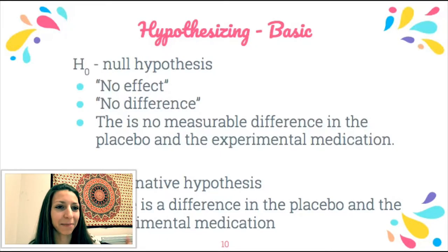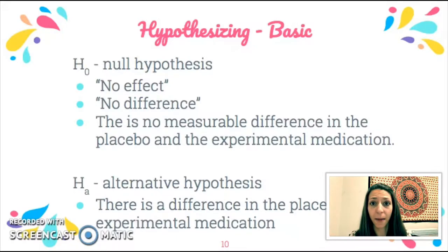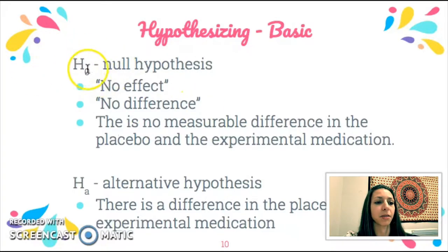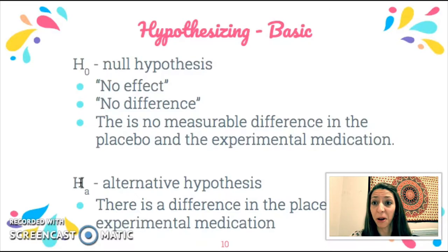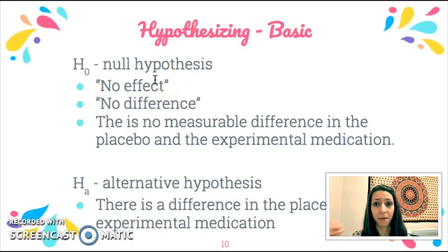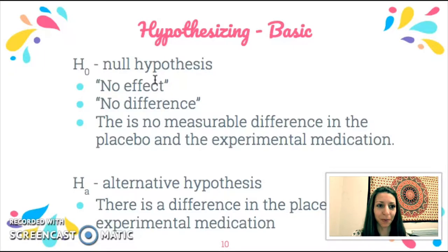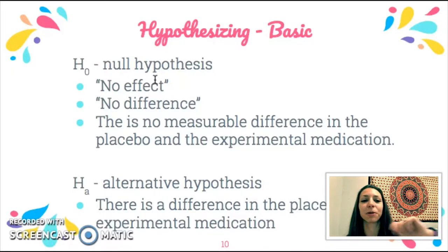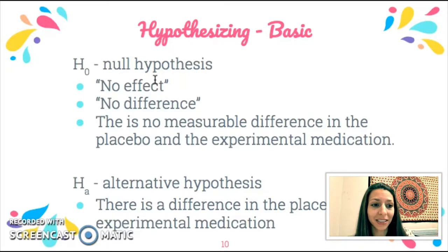There are many different hypotheses you can create to statistically analyze an experiment. The base we'll start with in this course is the null hypothesis (H₀) and the alternative hypothesis (Hₐ, sometimes called the experimental hypothesis). The null hypothesis states that the experimental treatment will have no effect — there will be no difference between treatment groups. For example: 'There is no measurable difference between the placebo and the experimental medication.'